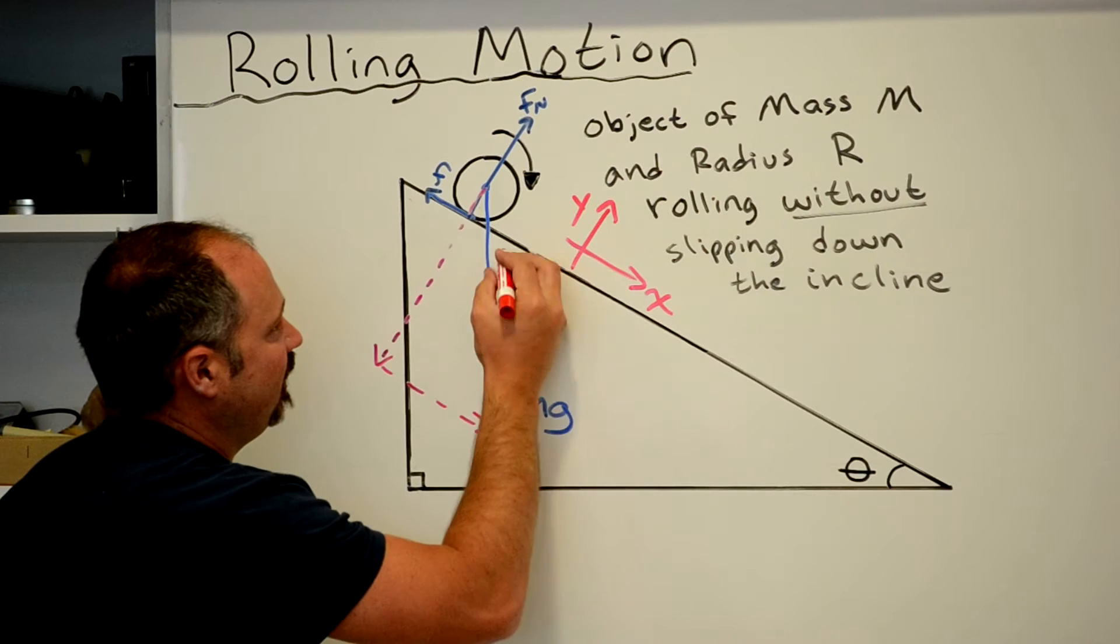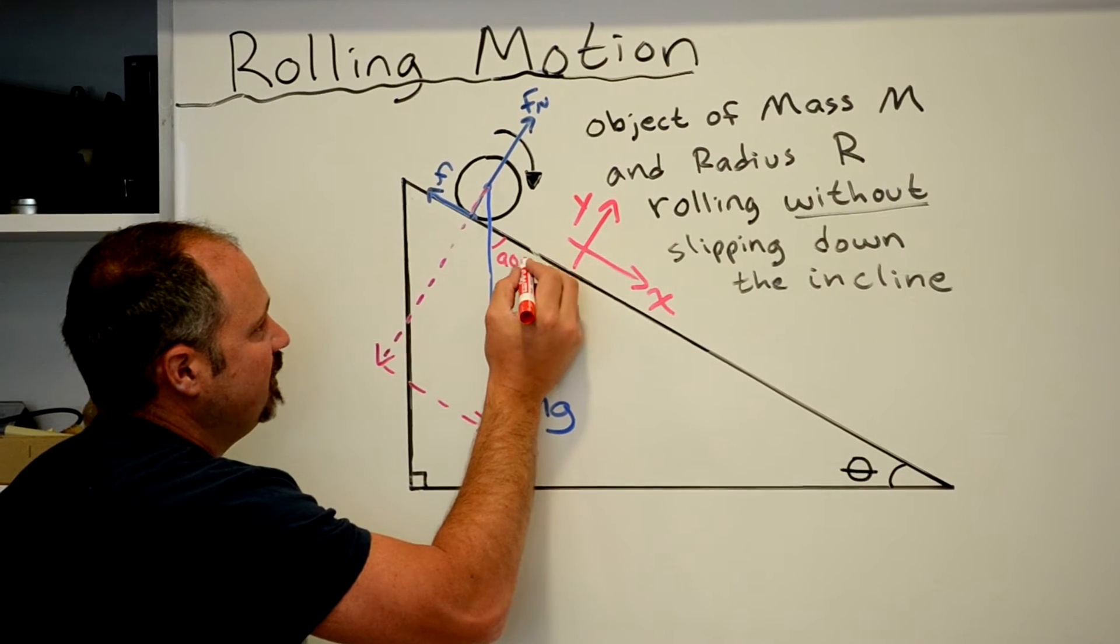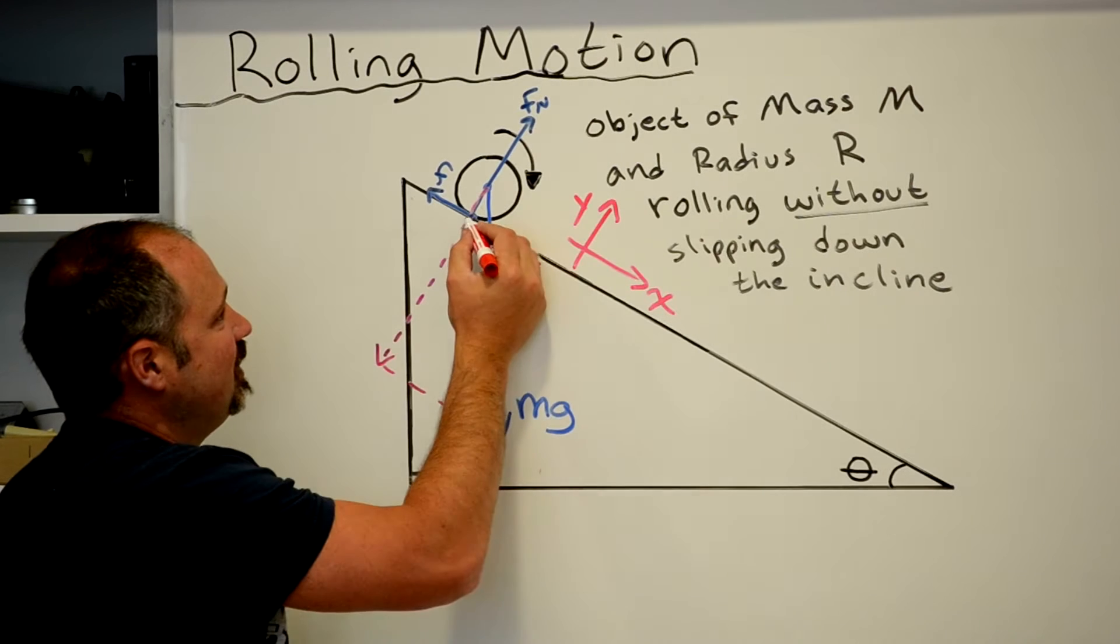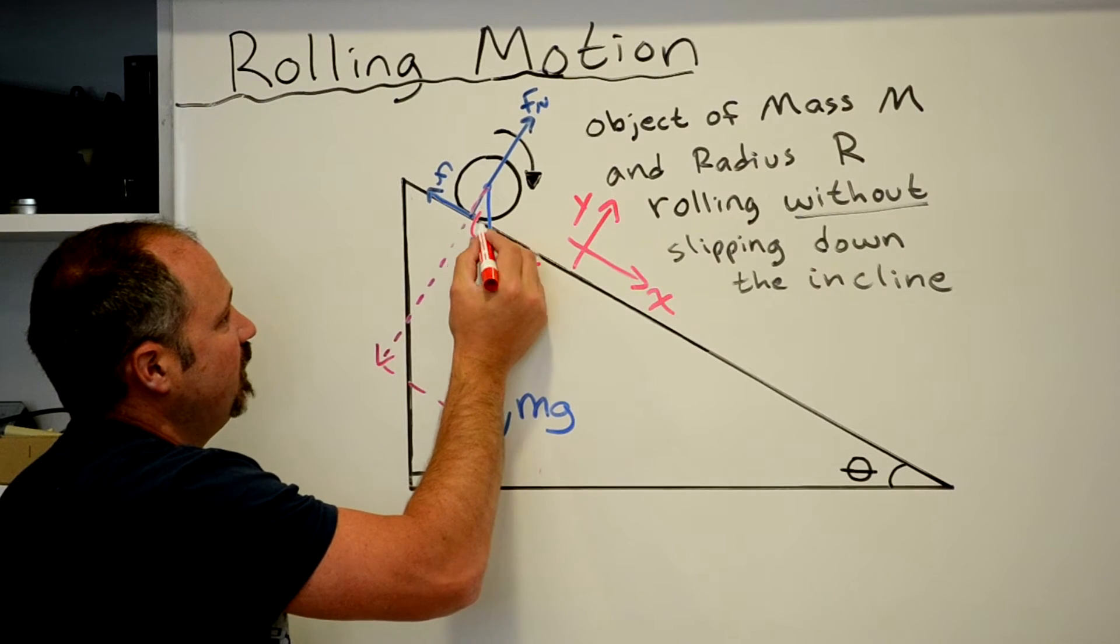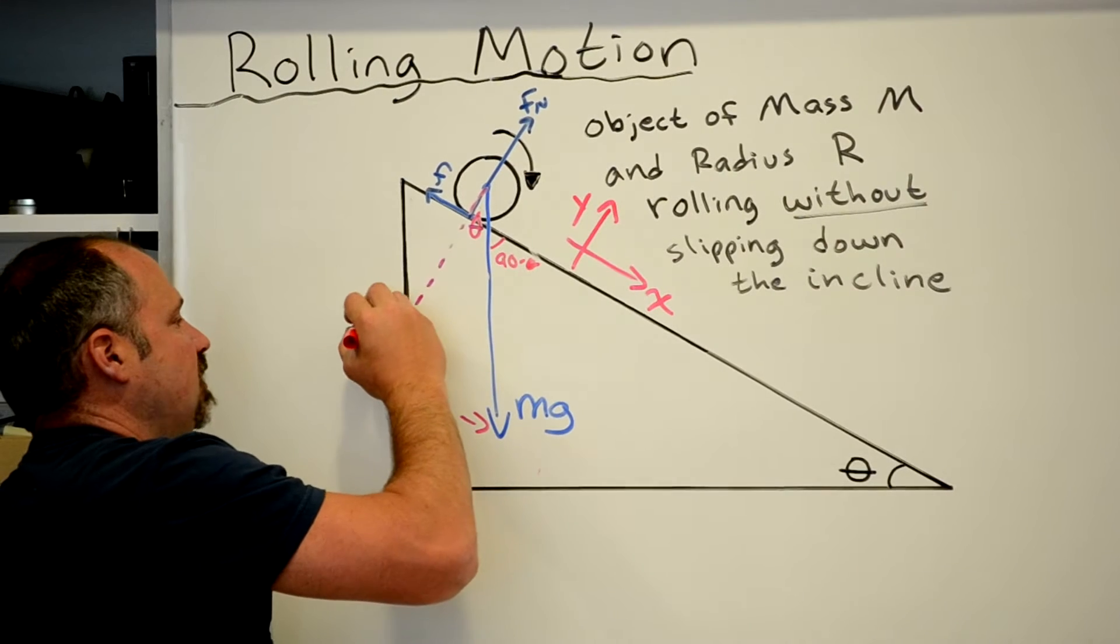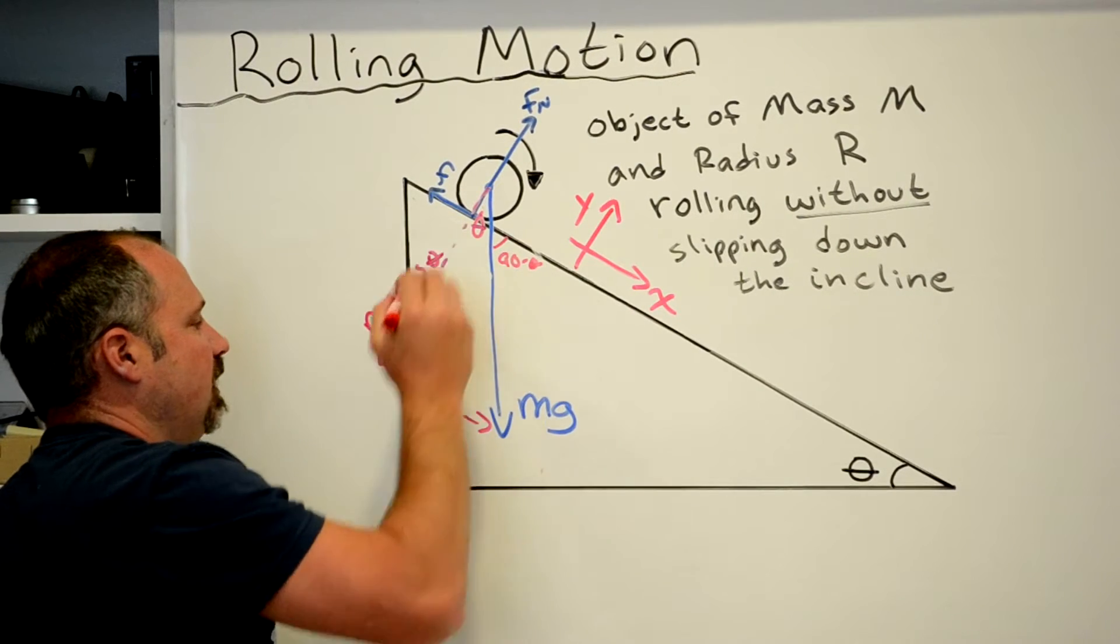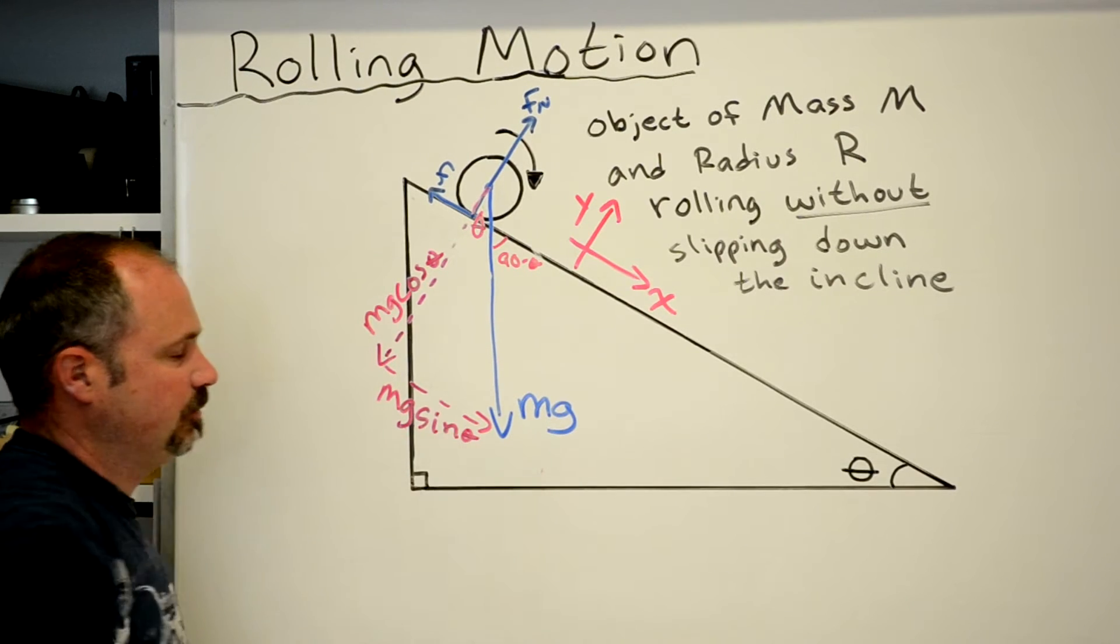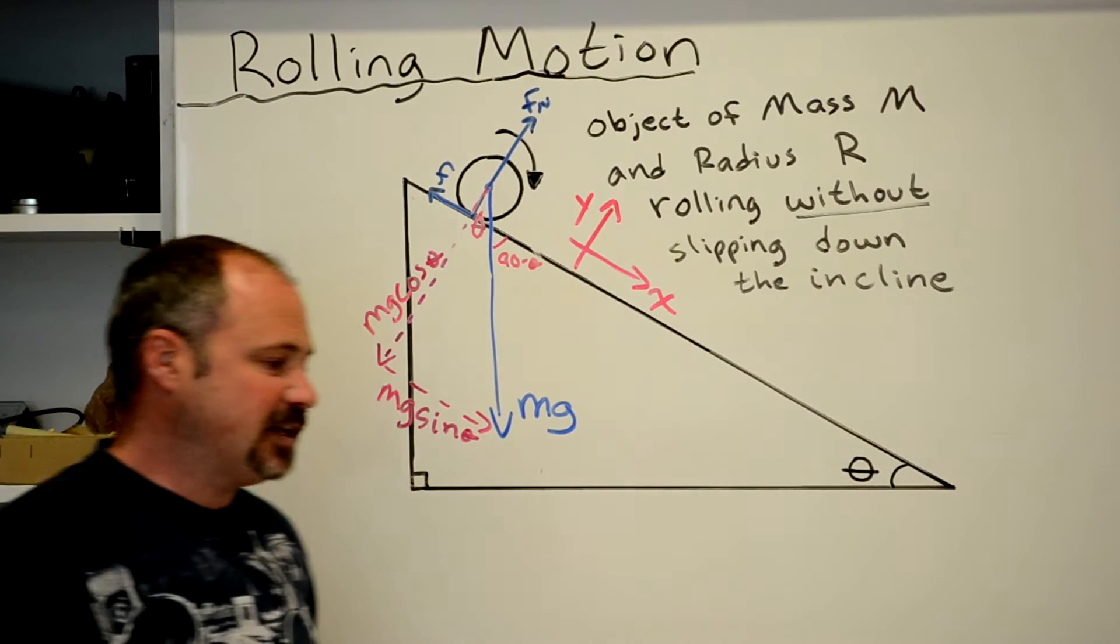And if this is theta, this must be 90 minus theta because this makes it perpendicular. And since this is perpendicular, therefore, this angle also has to be theta. Thus, I know this component is mg cos theta. This component is mg sine theta. So we've nailed down the forces.